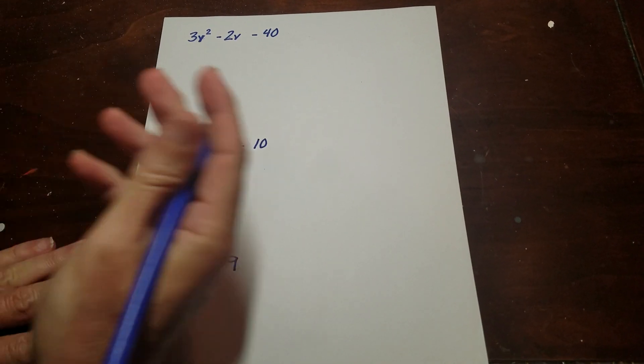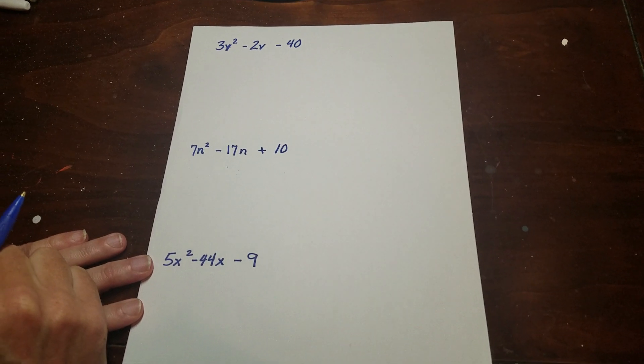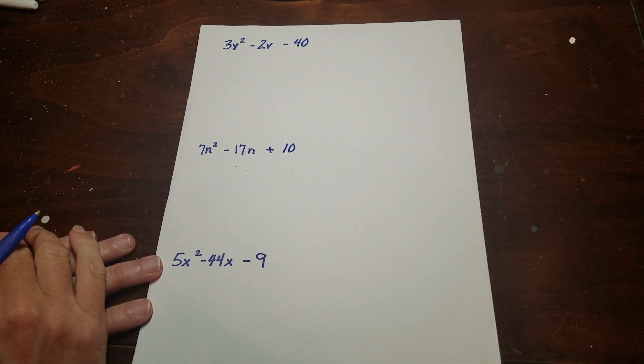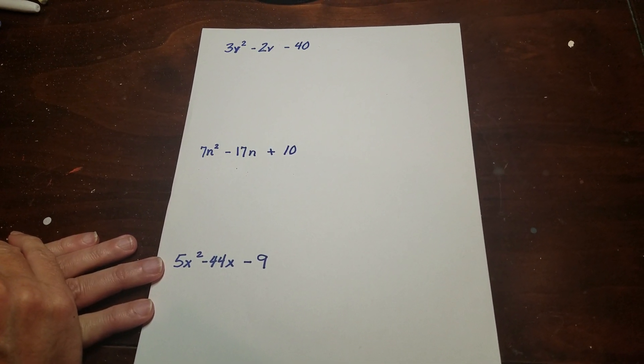What we're going to do today is sometimes referred to as the British method. Sometimes you'll look online, they call it x-factor or something. But basically what you have to do is you're just going to factor these. So we were solving before, and we were graphing, but we're just going to factor these again.